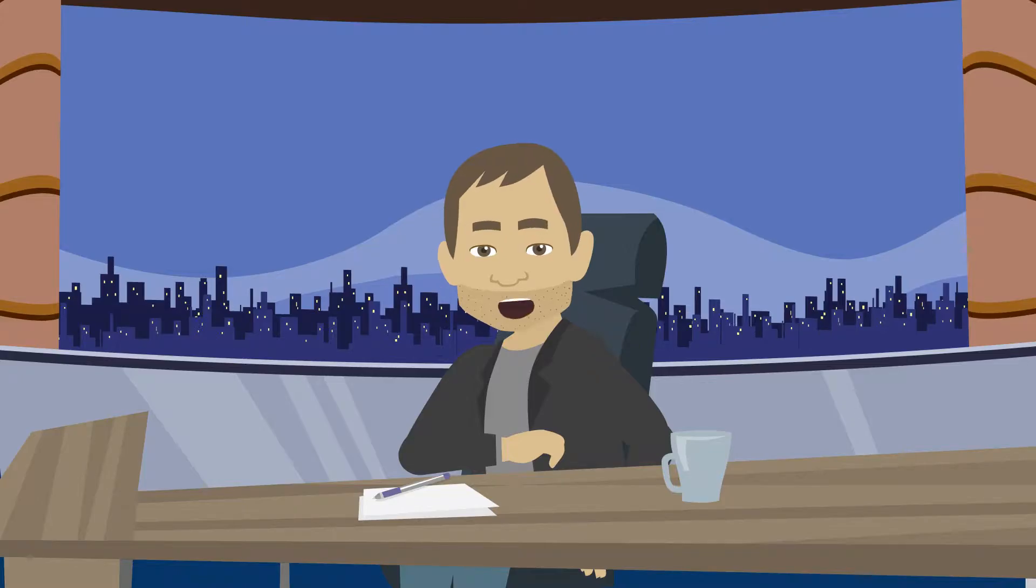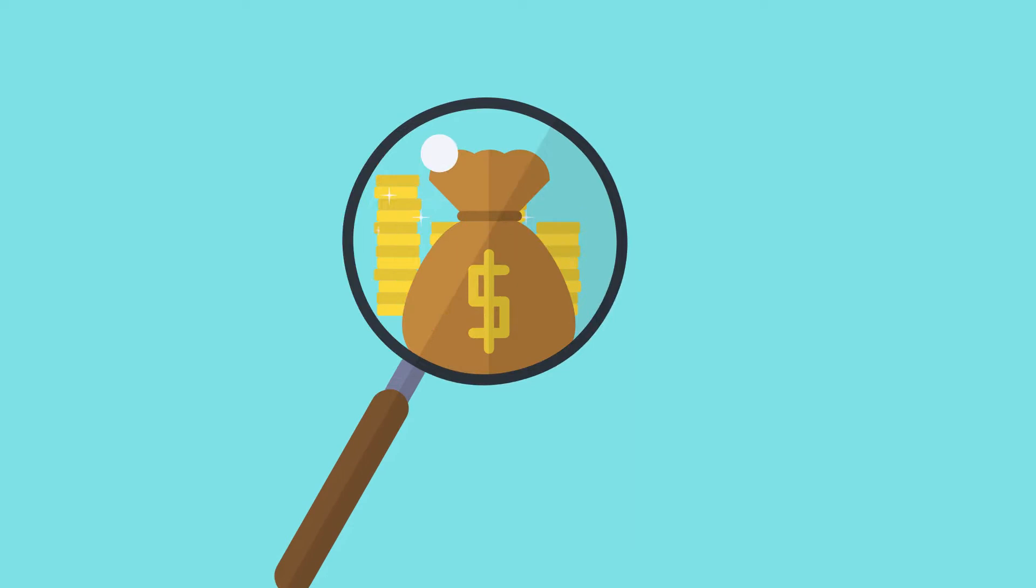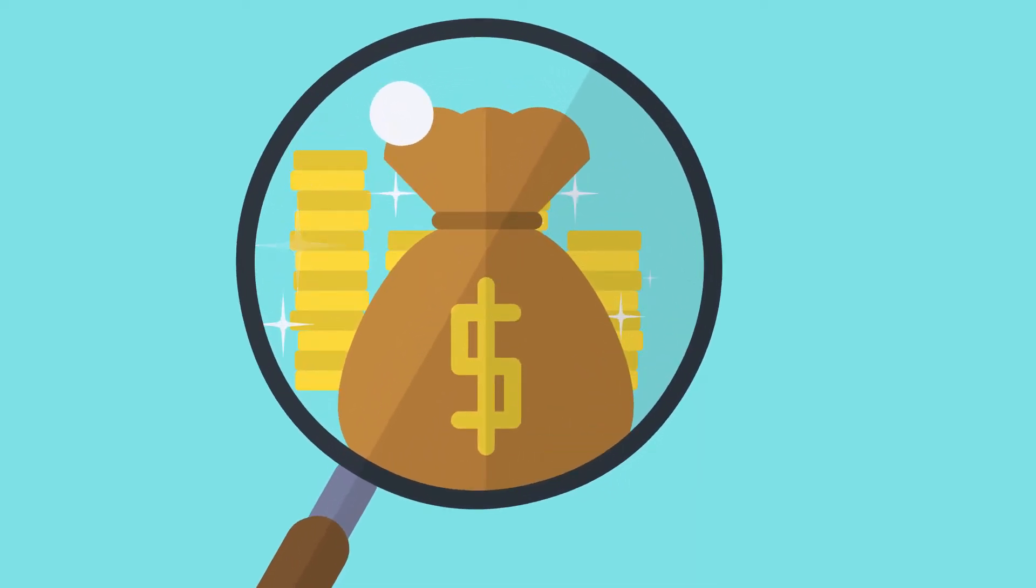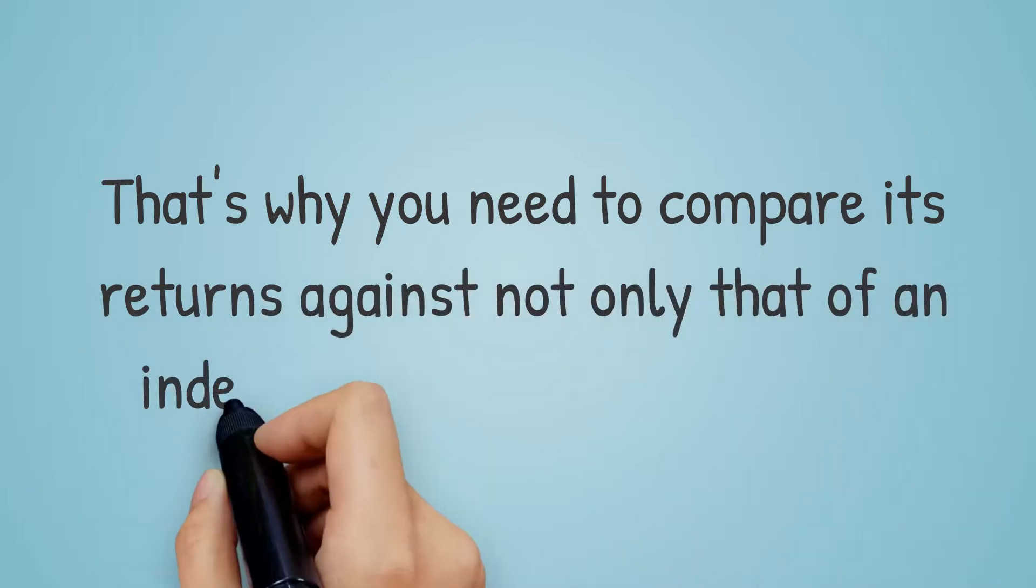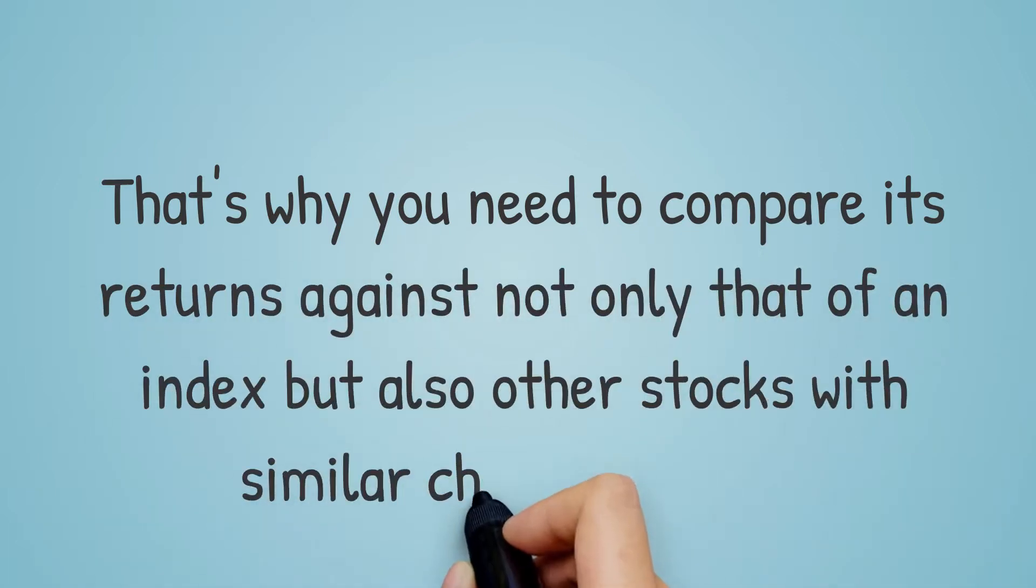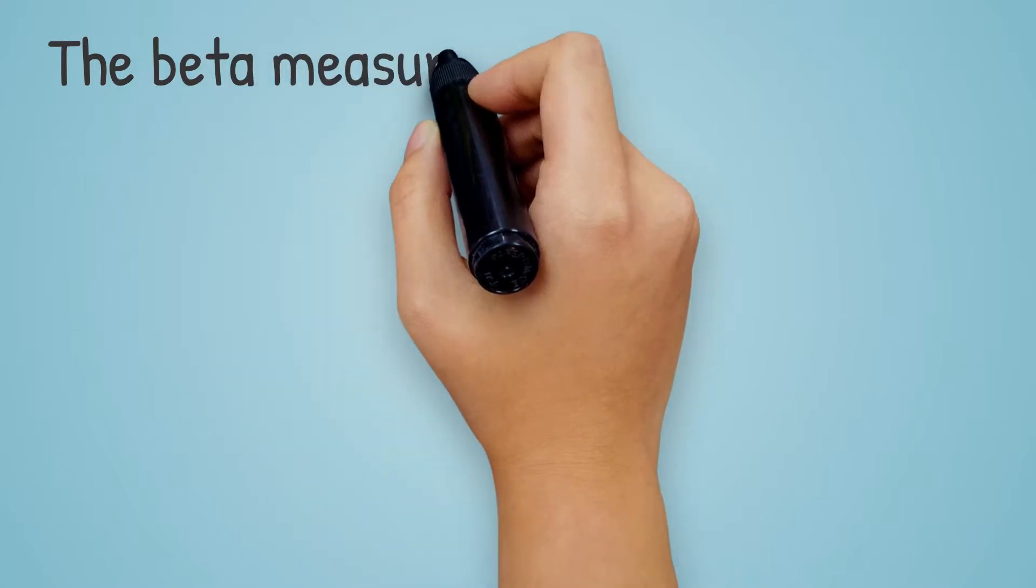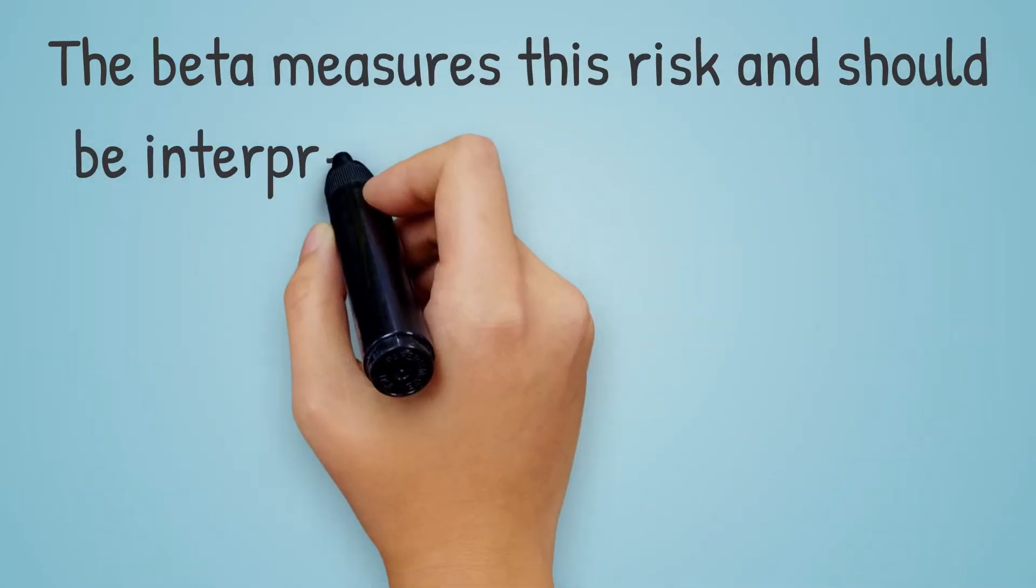In this last segment, I'm going to share with you making sense with beta. But quickly before that, let me show you how to interpret beta. To recap, when you invest in a particular stock, it is important to know how risky the investment is. That's why you need to compare its returns against not only that of an index, but also other stocks with a similar characteristic. The beta measures this risk and should be interpreted as follows.